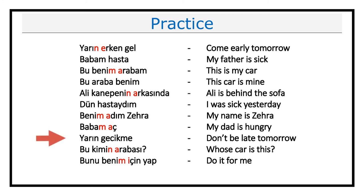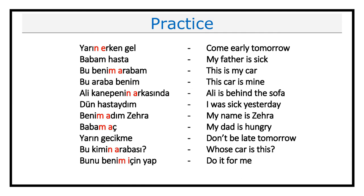In the ninth sentence, again we don't have any connection. Yarın gecikme. In the tenth sentence, the connection is between the words 'kimin' and 'arabası'. Bu kimin arabası. And in the last sentence, we have a connection between 'benim' and 'için'. Bunu benim için yap. That's it. Congratulations. You now know the connection rule in Turkish language. See you in the next lessons.